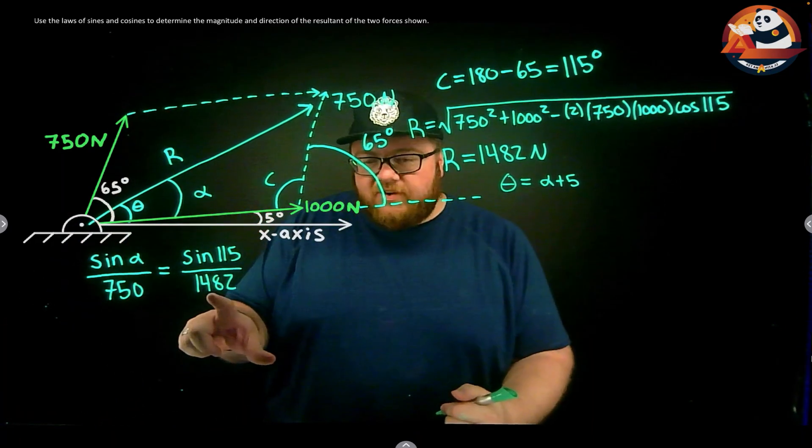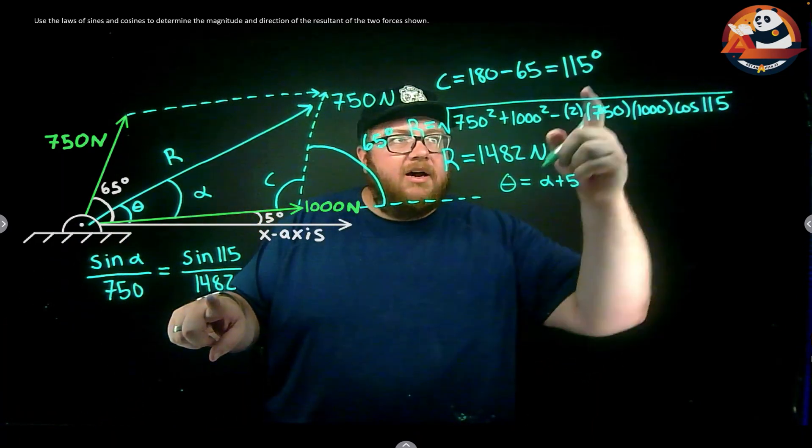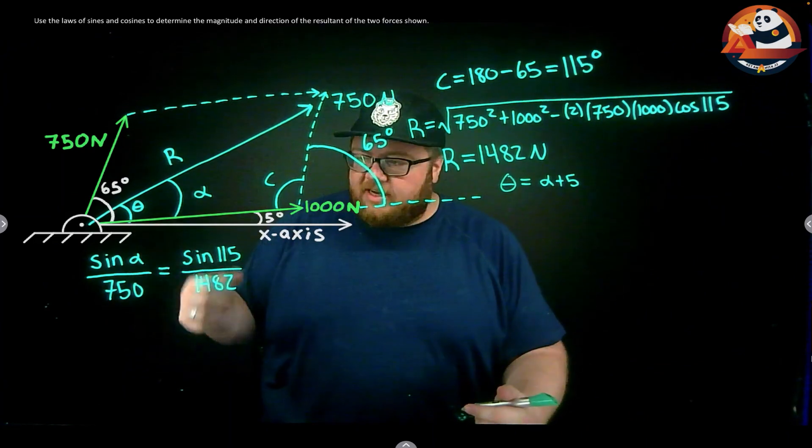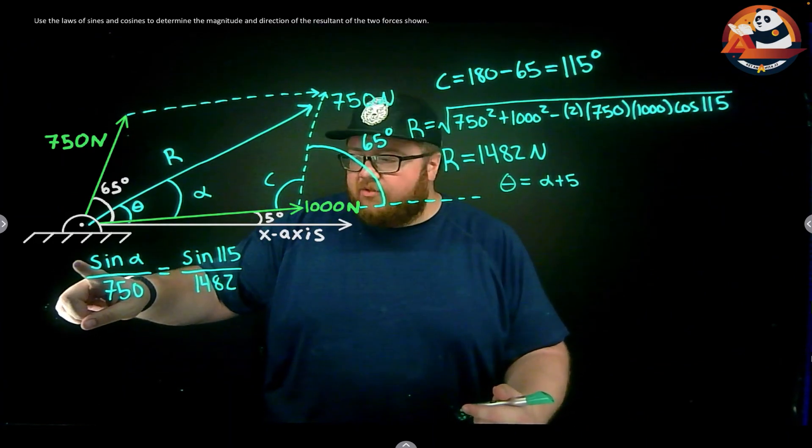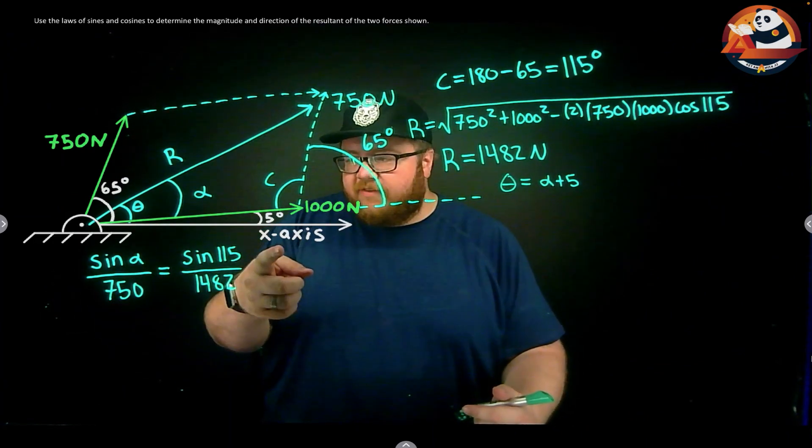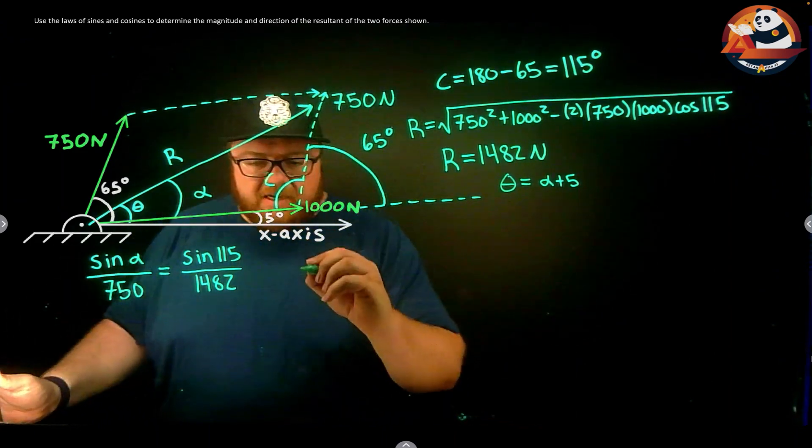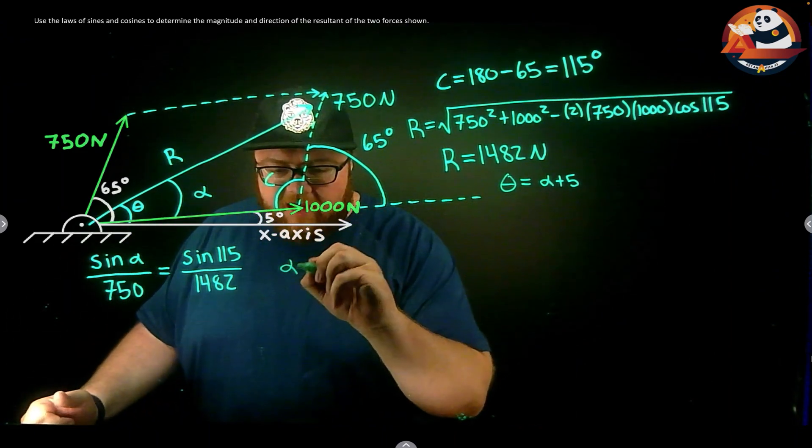That's why I do law of cosines first - because then I know this force and I can use it in the law of sines. Alpha's my only unknown though. I just need to multiply by 750, take the inverse sine of whatever that works out to be, and I'm going to get the angle alpha is 27.3 degrees.